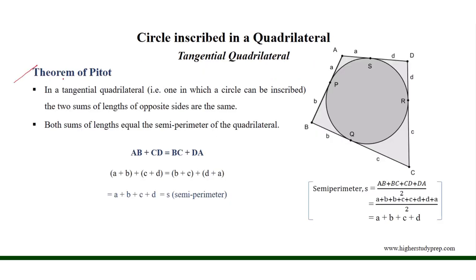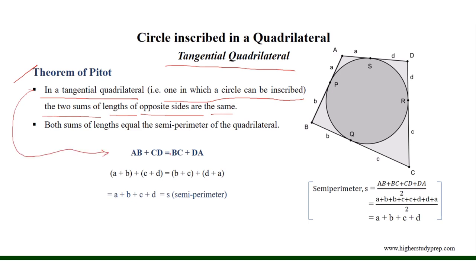Theorem of Pitot: In a tangential quadrilateral — that is, one in which a circle can be inscribed and the sides of the quadrilateral work as tangents for the circle — the two sums of the lengths of opposite sides of the quadrilateral circumscribed about the circle are the same. According to the theorem, for quadrilateral ABCD circumscribed about the circle, the opposite sides are AB and CD, and BC and DA. So we can write that AB plus CD equals BC plus DA.